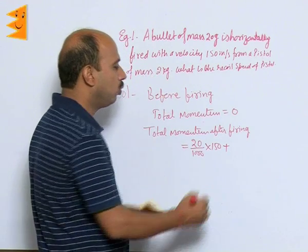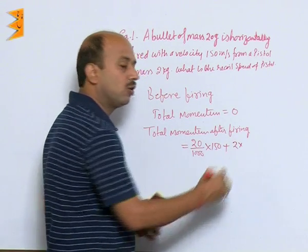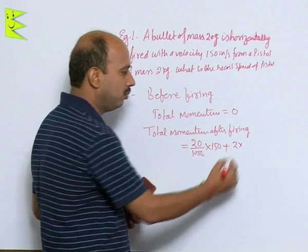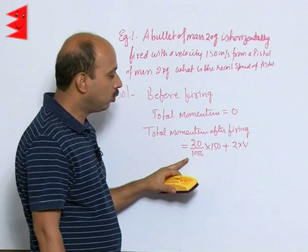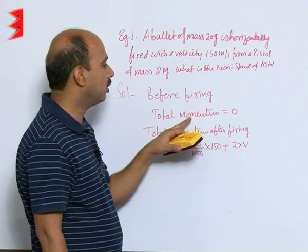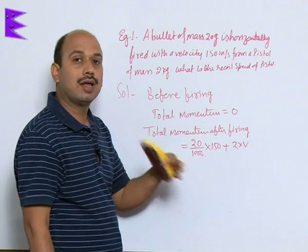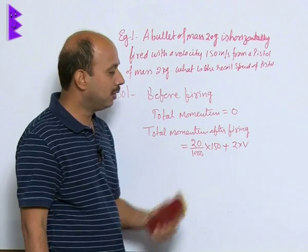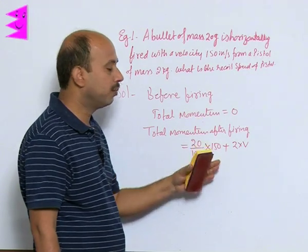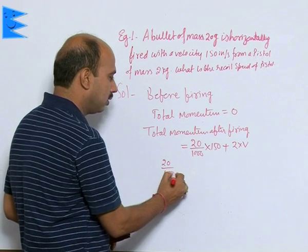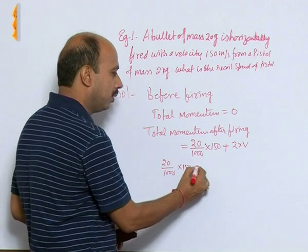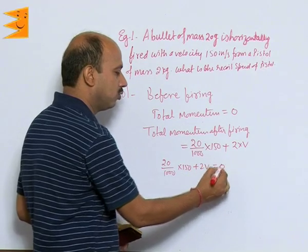Mass of the pistol is known - that is 2 kg - but velocity is not known. So, let velocity be V. This is the total momentum after firing; before firing it was zero. According to the principle of conservation of linear momentum, these two momentums should be equal. So, you can write: 20/1000 × 150 + 2V = 0.